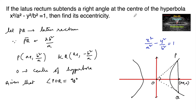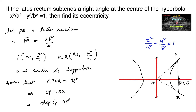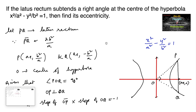Since the latus rectum subtends a right angle at the center, this implies that OP is perpendicular to OQ, which implies that the slope of OP multiplied by the slope of OQ equals −1, since they are perpendicular.